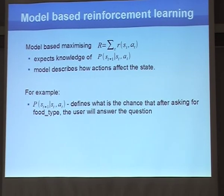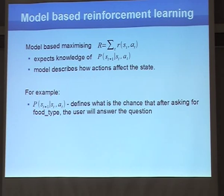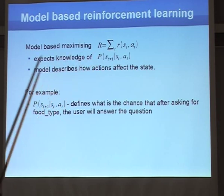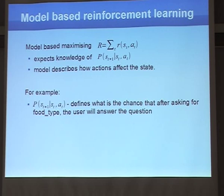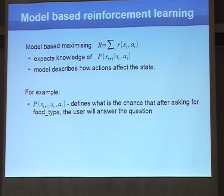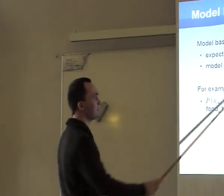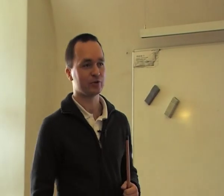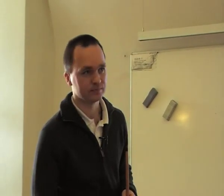This model-based reinforcement learning approach tries to maximize the reward function using a model of the environment — the probability of how an action affects the state. For example, if we ask the user about food type and the user never answers that question, it does not make sense to ask it. Or the user may answer a different question. The model describes these transitions. But often we do not have access to this model — we do not know how users behave — so we rely only on collected data.